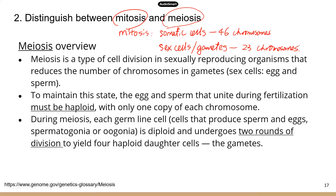These two groups of cells are very different — they have different numbers of chromosomes. So you can't make these cells with just one type of cell division. Mitosis is used to make somatic cells, and meiosis is used to produce sex cells or gametes.